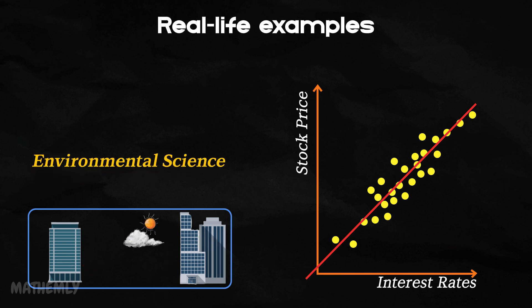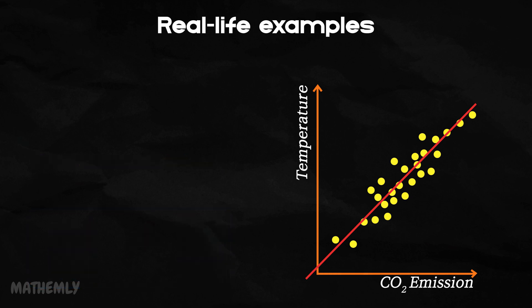Environmental science: Researchers can use simple linear regression to predict a specific environmental change, like temperature, based on one factor such as the amount of CO2 emissions. The simplicity of simple linear regression lies in its ability to model a clear relationship between two variables, providing valuable insights in a straightforward manner.